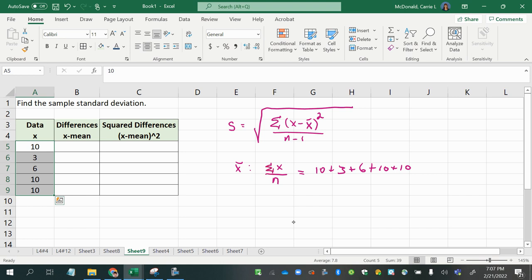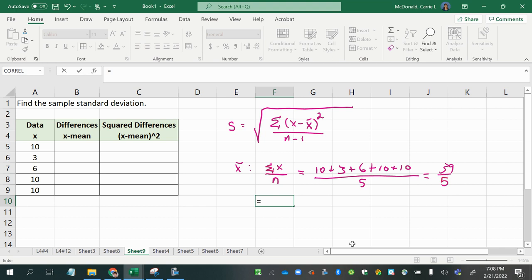So we have how many? 1, 2, 3, 4, 5. So our sample size, the lowercase letter n, is 5. So when you simplify this, you get 39 divided by 5, and 39 divided by 5 is 7.8.